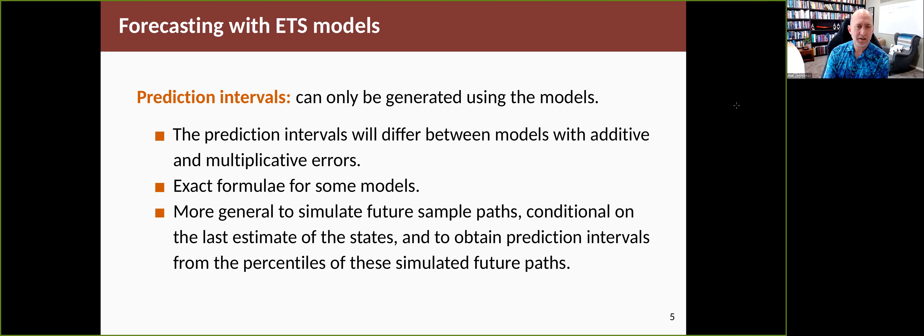The prediction intervals come from being able to estimate the variances of these models, which can't come from the methods we introduced in sections one, two, and three—they only come once we've got to the models. The prediction intervals will differ between models with additive and multiplicative errors. For some models, we have exact formulas for the variances and therefore exact formulas for the prediction intervals.